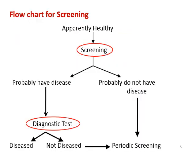Apparently healthy people undergo screening and we get two sets of people: those who probably have disease and those who probably do not. Screening is never confirmatory — we have to do a diagnostic test to confirm. Those who probably have disease will do a diagnostic test and be divided into diseased and not diseased. Those screening negative and confirmed not diseased should undergo periodic screening, maybe yearly or every six months.